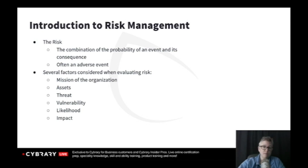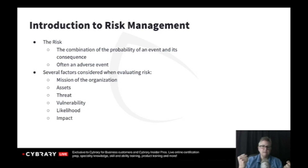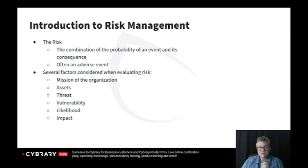Threats pose harm to an asset — anything that could potentially cost me my asset or a portion of it. The threat agent is the entity that carries out the threat. Vulnerabilities are weaknesses. When you're talking about a risk, you don't have a risk unless you have both a threat and a vulnerability. If there's something that could harm my asset but I have no weakness, then I don't have a risk. For example, if there's an internet-based attack but I'm not connected to the internet, I have zero risk. Or if I'm connected to the internet but there are no threats, I don't have a risk. Where a threat and a vulnerability meet — that's where your risk exists.